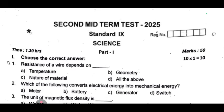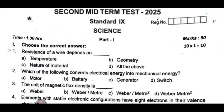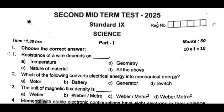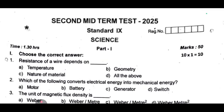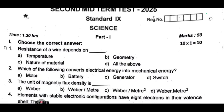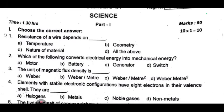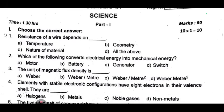Starting with the first one: resistance of a wire depends on dash. 2nd one: which of the following converts electrical energy into mechanical energy? 3rd one: unit of magnetic flux density is dash. 4th one: elements with stable electronic configuration have 8 electrons in the valence shell — they are known as dash.